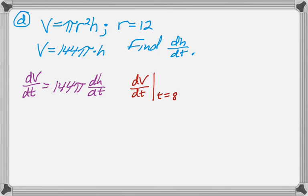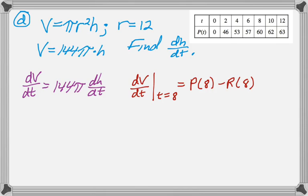To figure out dV dt at 8, what I need to do is it's going to be the rate at which it's coming in, which is P of 8, minus the rate at which it's going out, which is R of 8. And P of 8 we get from this table here, it's 60. And R of 8 we get by punching 8 into that function on our calculator. So the rate of change of the volume at t equals 8 is 43.242.